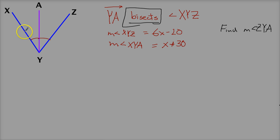So the first thing I'm going to say is because of the angle addition postulate, the measure of angle XYZ has the same value as the measure of angle XYA plus the measure of ZYA. The little ones equal the big one, that whole thing.